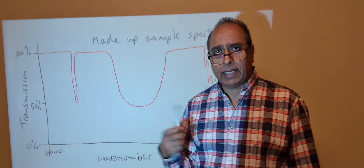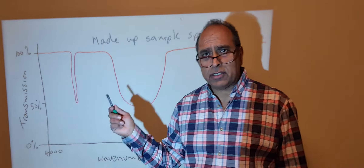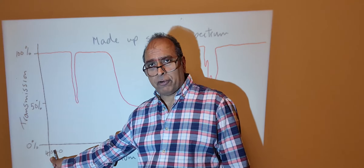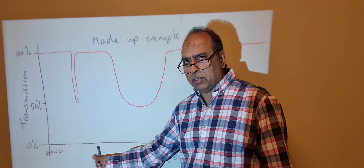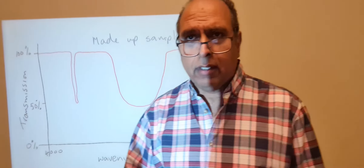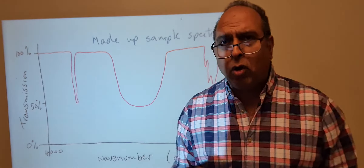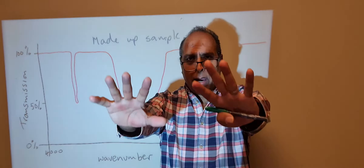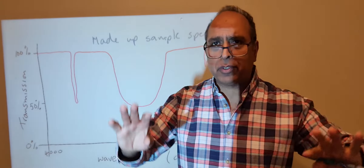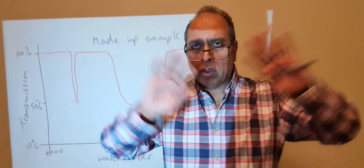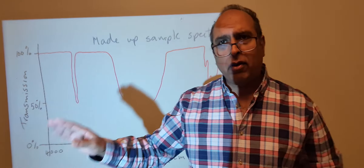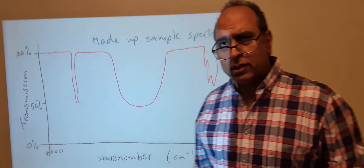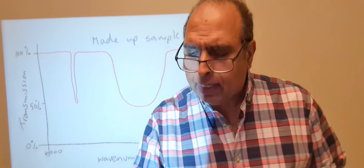In older machines used in university laboratories, the machine would scan from one wavelength across, taking a couple of minutes before you could rip out the graph. More modern machines use Fourier transform, where all frequencies of light are sent in simultaneously and the whole spectrum develops straight away rather than scanning one frequency at a time.